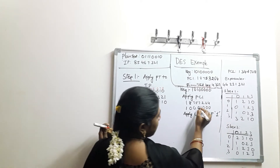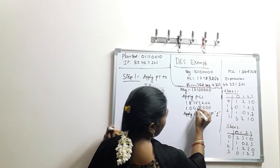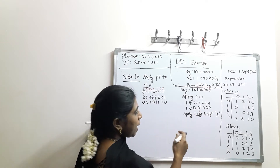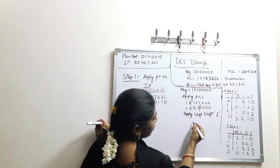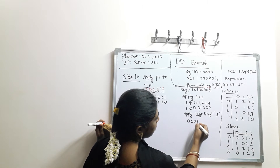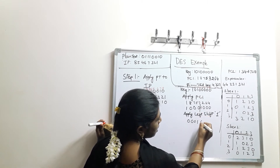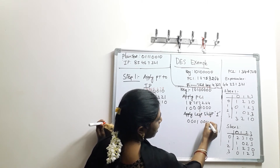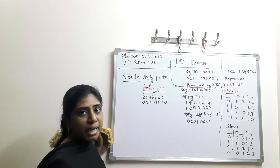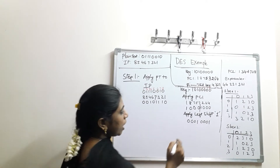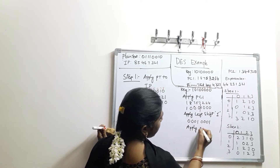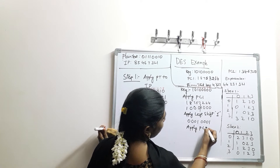Take the half values — left and right. After applying the 1-bit left shift, you get 0, 0, 0, 1 on the left half and 0, 0, 0, 1 on the right half. Then apply Permuted Choice 2 to these shifted values.